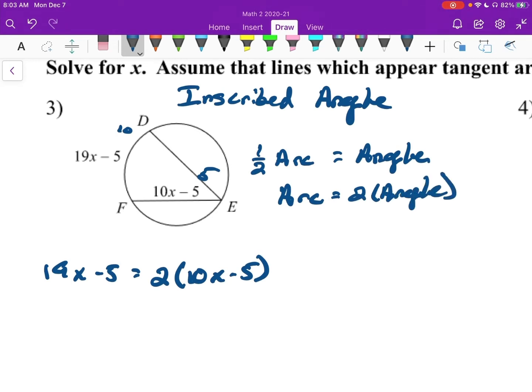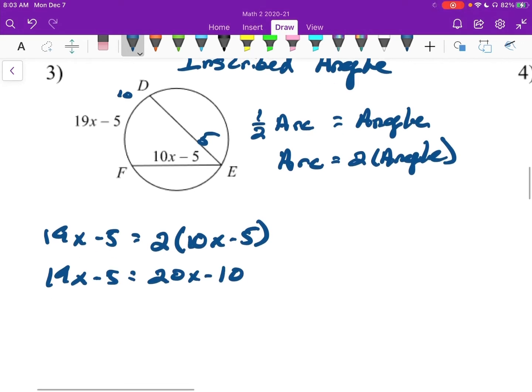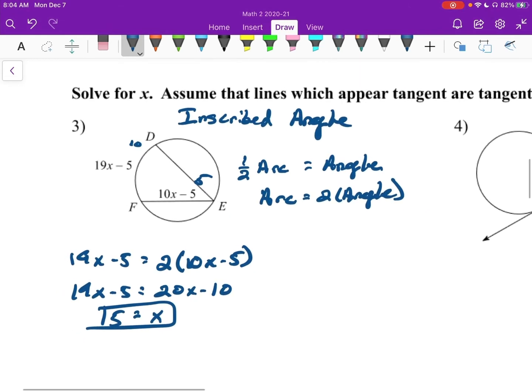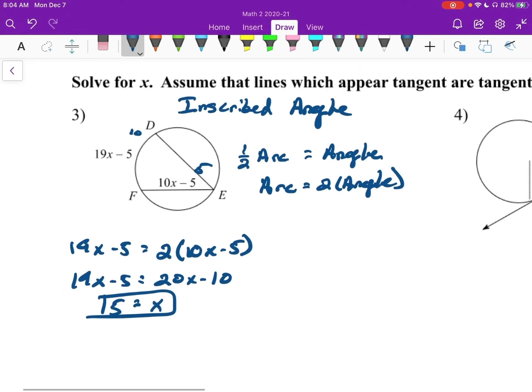Okay. So solving this, 19, 19, X minus 5 is 20X minus 10. I'll put my X's on the right side and my 10's on the left. So that's going to be 5 equals X. What am I supposed to solve for? Solve for X. So there we are.